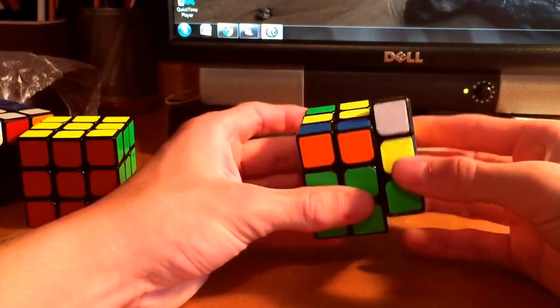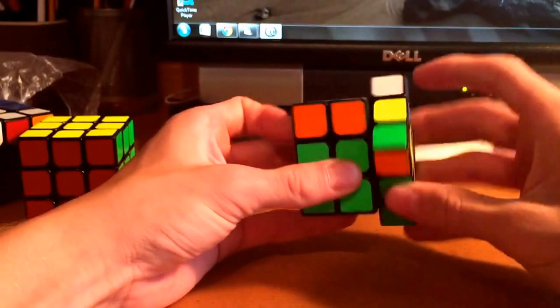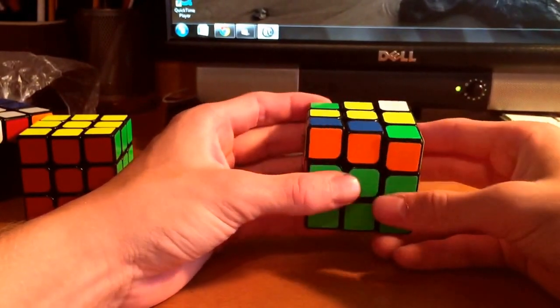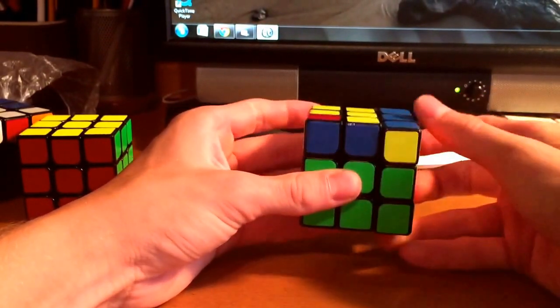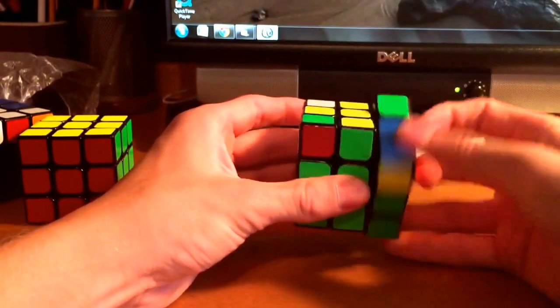And so, what some people may do is pair it up like that, and do some sort of bunch of sexy moves to do that, but a really easy way to do this is, again, hide the edge and pair it up like that, and then insert it.